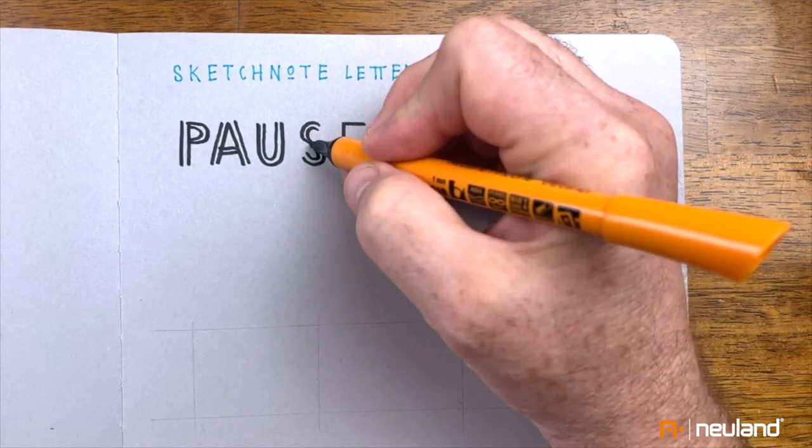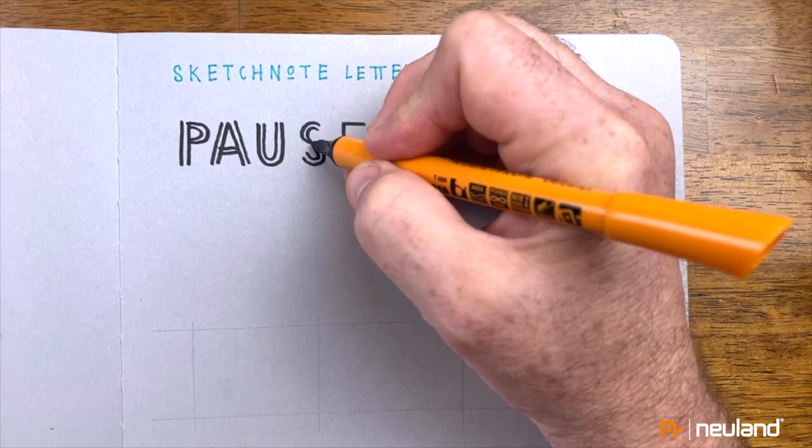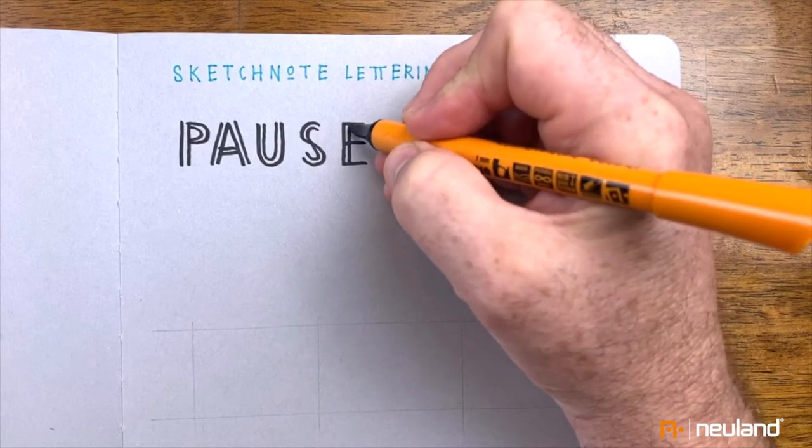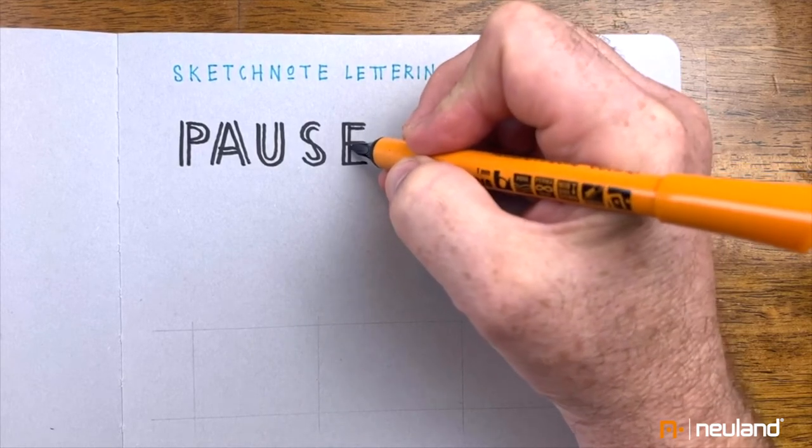Now we'll deal with this oddity here later because it's too thin right now. But that's okay. And then finally, on the E, I do the same thing, just add another line.